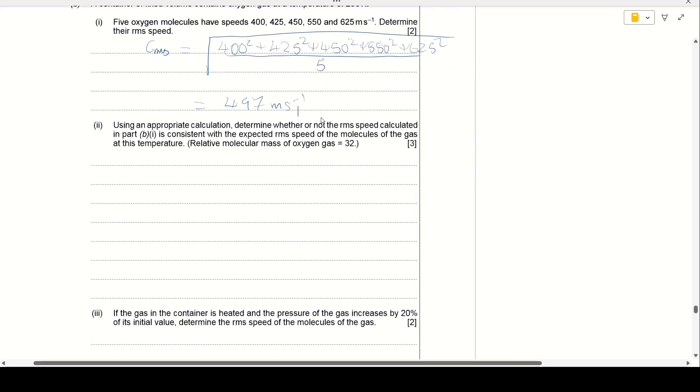For part two, using an appropriate calculation, determine whether or not the RMS speed calculated in part B1 is consistent with the expected RMS speed of the gas molecules of the gas at this temperature. And we're given the relative molecular mass of the oxygen gas is 32. So one way of thinking about this is to think about the formula where we have U equals 3 over 2 NKT, given in the data book, where N is the total number of molecules and U is the internal energy. Now, as we said, the internal energy is basically the sum of the kinetic energies of our gas molecules. So N molecules, each having a mean kinetic energy of half MC squared bar. We can cancel the Ns. We can even cancel the 2s. And we're left with MC squared bar equals 3KT.